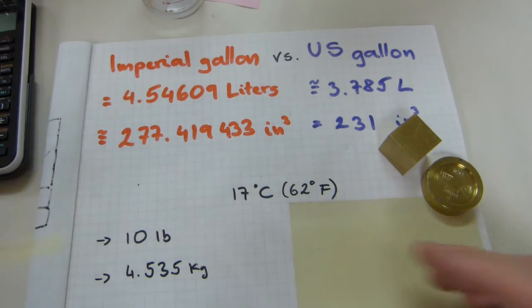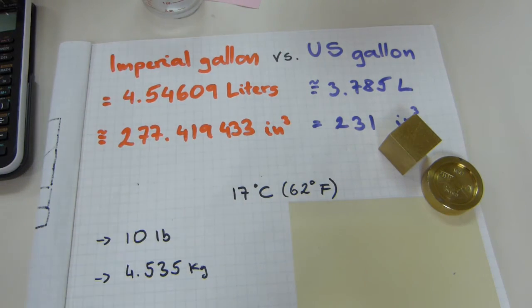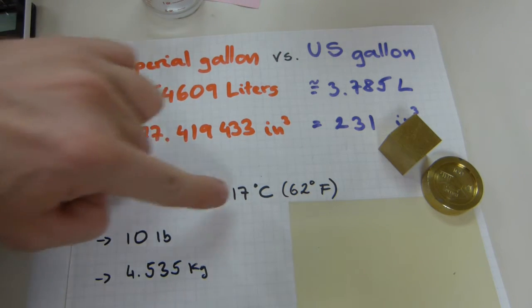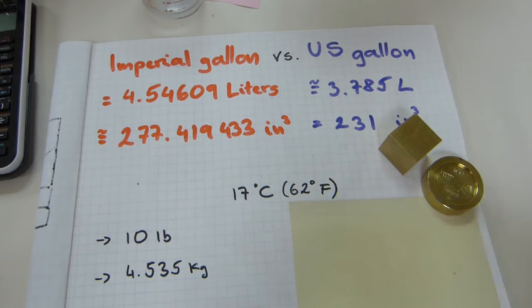Now, this of course was a little bit refined and standardized, because the distilled water, the 10 pounds of distilled water, had to be at 17 degrees Celsius temperature, or 62 degrees in Fahrenheit, and at a standard atmospheric pressure of 30 inches of mercury, or 762 millimeters of mercury, or 14.7 PSI.